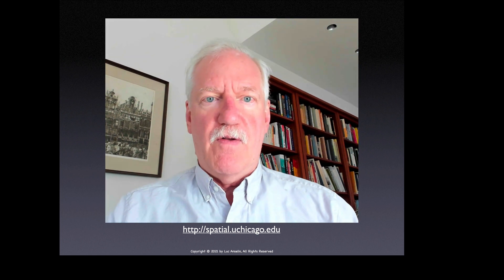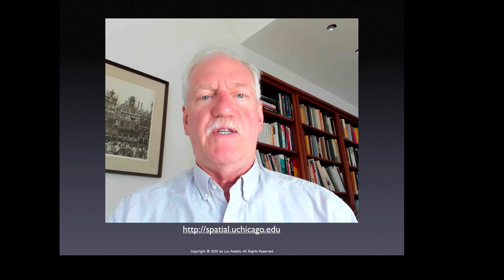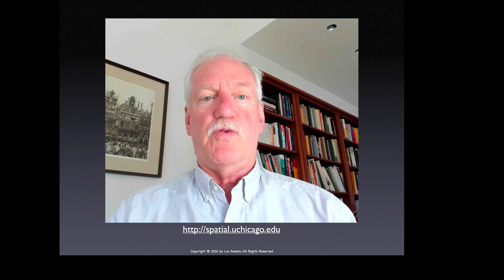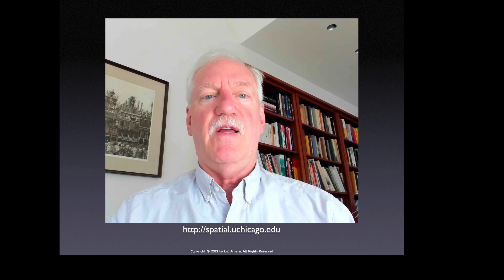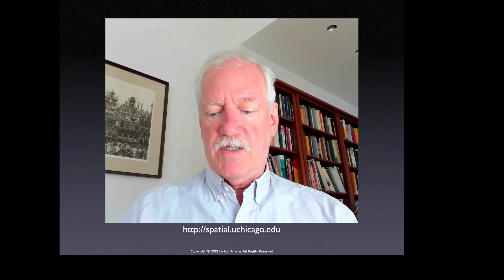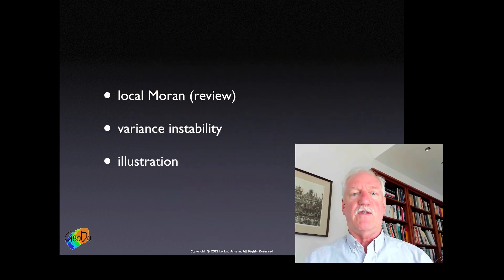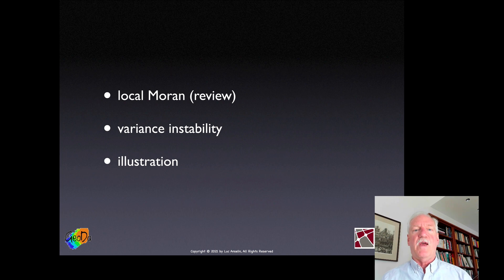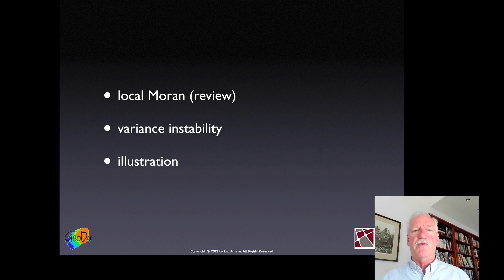Welcome back. So far in our discussion of clusters of rates, we didn't really say much about clusters — we just talked about how to visualize the rates, the crude rates, and specifically how to apply smoothing to take out the effect of variance instability. In this second lecture dealing with clustering of rates, we'll actually focus on clusters, and specifically on how we can adjust the local Moran statistic for this variance instability. I'll review the base case, then give a brief technical discussion of how to adjust the statistic, and close with an illustration.